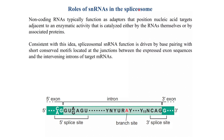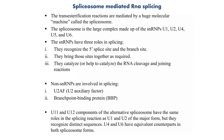One of the key functions of snRNAs is their role in the spliceosome. These non-coding RNAs typically function as adapters that position nucleic acid targets adjacent to an enzymatic activity catalyzed either by the RNAs themselves or by associated proteins. Spliceosomal snRNA function is derived by base pairing with short conserved motifs located at the junctions between expressed exon sequences and the intervening introns of target mRNAs. They play a role in alternate splicing by acting as sequences where spliceosome proteins are recognized and bind.